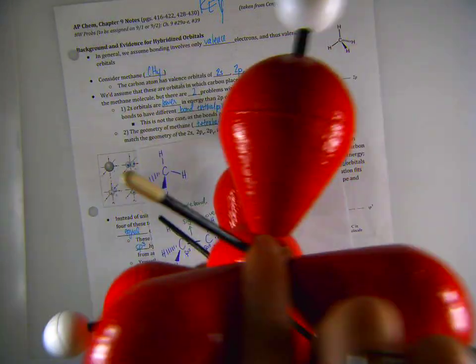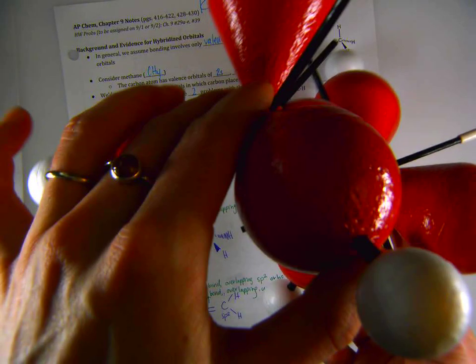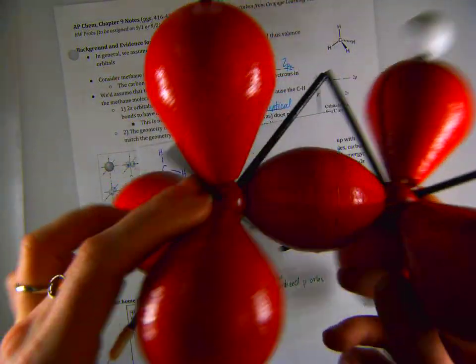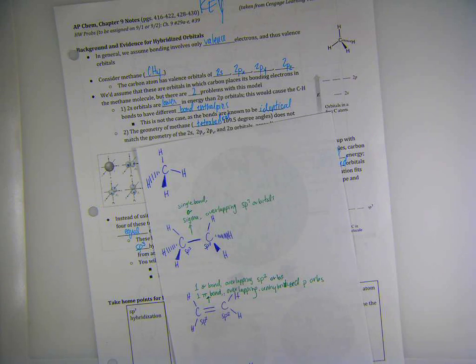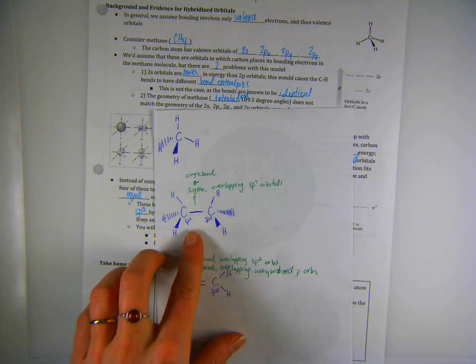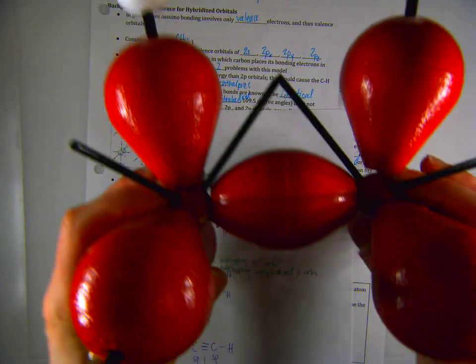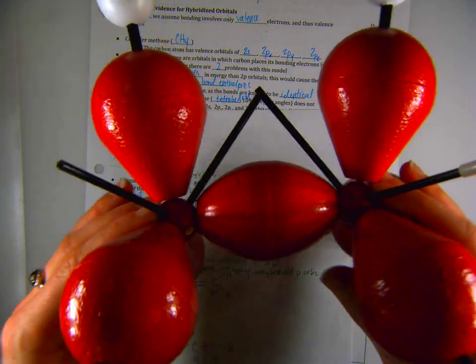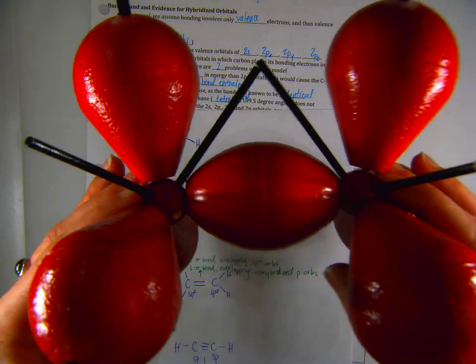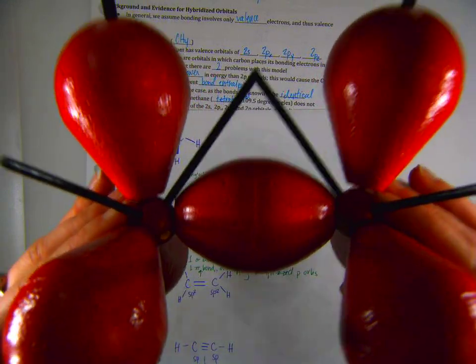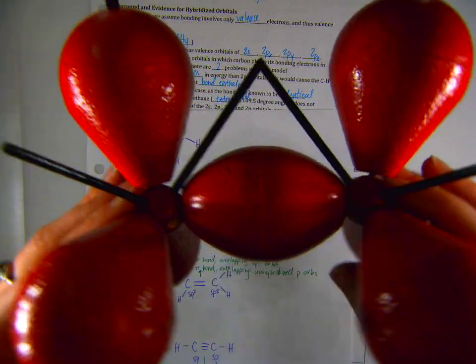The remainder of the red lobes are the other sp3 orbitals that are bonding with hydrogen. So we're looking at a 3D model of what I've drawn on the paper here. So I'll show it one more time. Hopefully you can envision this in your head. So we have four sp3 hybridized orbitals total. Three of them are bonding with the hydrogens.